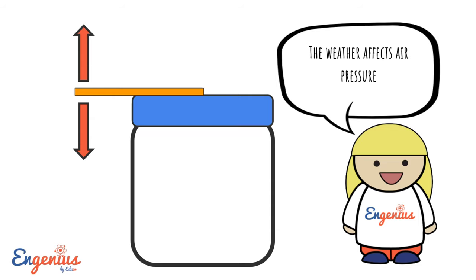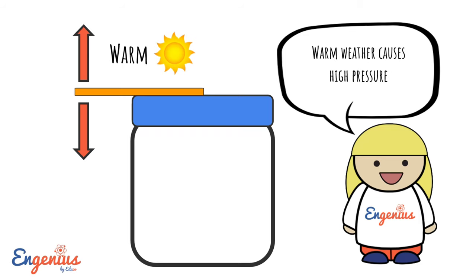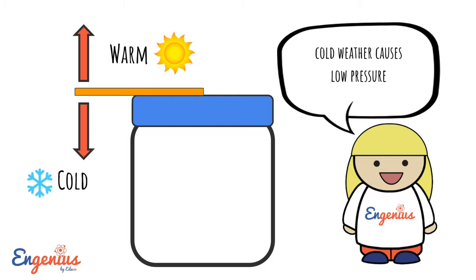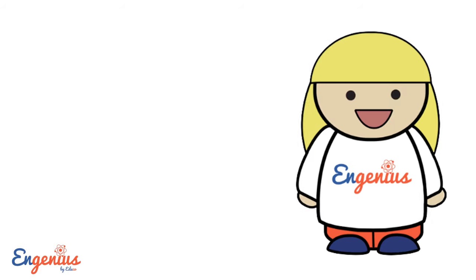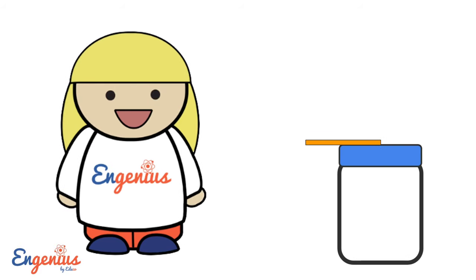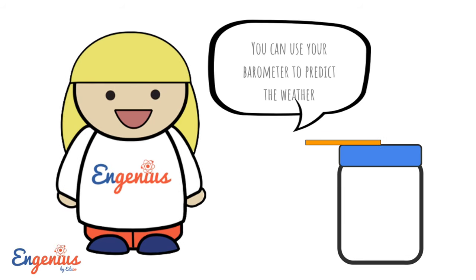The weather affects air pressure. Warm weather causes high pressure. Cold weather causes low pressure. You can use your barometer to predict the weather.